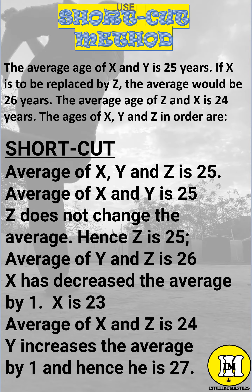Average of Y and Z is 26. X has decreased the average by 1, hence X is 23. Average of X and Z is 24. Y increases the average by 1 and hence Y is 27.